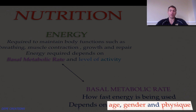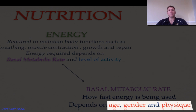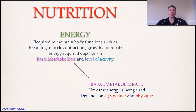The basal metabolic rate — how fast your energy is being used — depends on a number of factors. Age: the younger you are, the higher your basal metabolic rate can be, because you're growing, so even at rest your body is going through far more processes than a fully grown adult. Your gender: men have a higher average basal metabolic rate than women. And your physique: those with larger muscle mass and increased size also have a higher basal metabolic rate. Nutrition allows us to get energy into our bodies to maintain our BMR and the level of activity we choose to do.